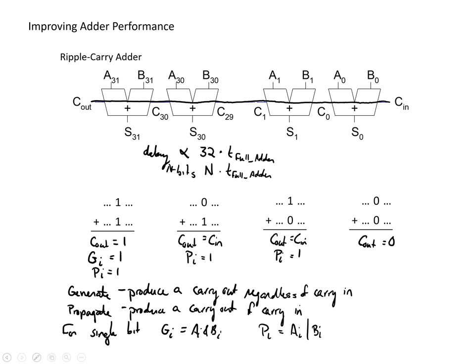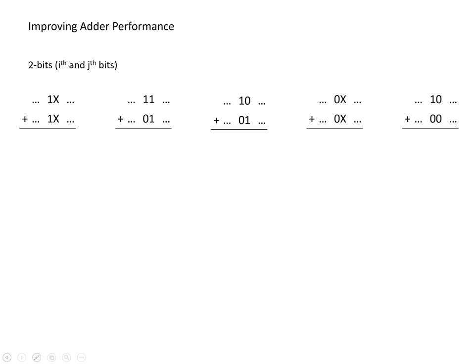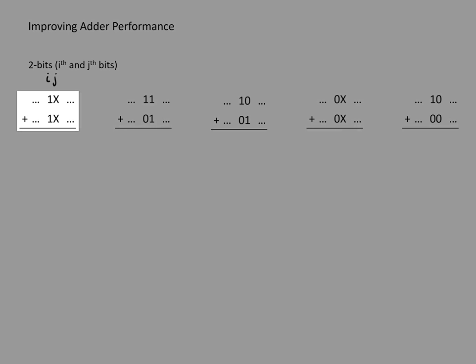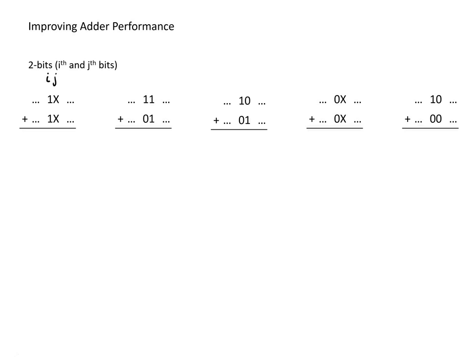Now we want to expand this idea to more bits. We'll look at combinations of two bits, referring to them as the i-th bits (more significant) and the j-th bits. In the first case, we have a one in both inputs for the most significant bit, so regardless of the other bit, we can say for sure we're going to have a carry out. We can say the i-th position generates a carry, and as a whole, the range from i to j is going to generate a carry.